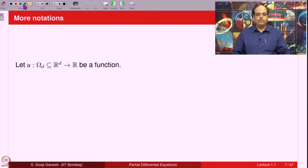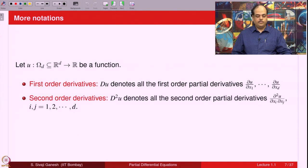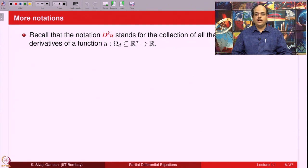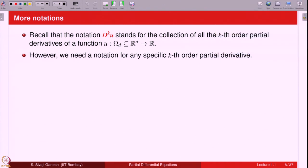Some more notations: let u be a function defined on omega_D taking real values. Then, the first order derivatives — the notation Du — denotes all the first order partial derivatives: ∂u/∂x₁, ∂u/∂x₂, ..., ∂u/∂x_D. The second order derivatives are denoted D²u, standing for all second order partial derivatives ∂²u/∂xᵢ∂xⱼ where i and j vary from 1 to D. In general, Dᵏu for k ≥ 1 denotes all k-th order partial derivatives of u.